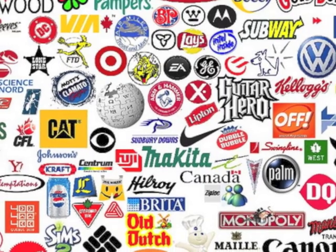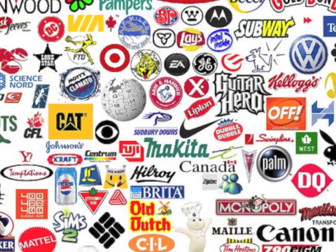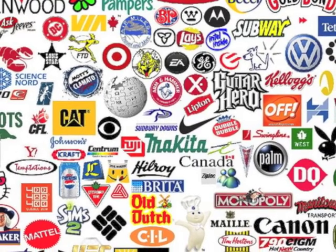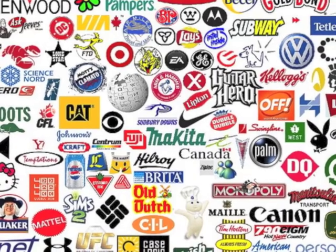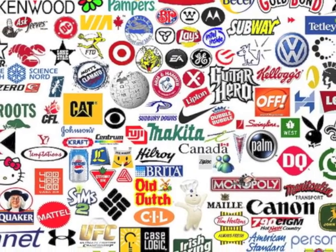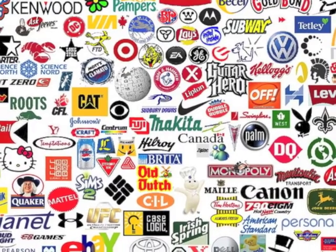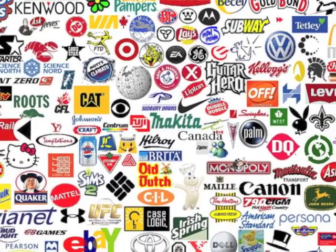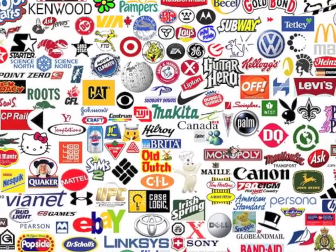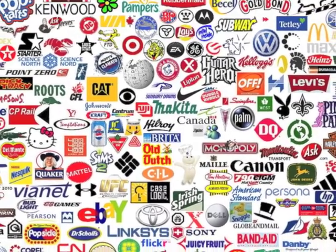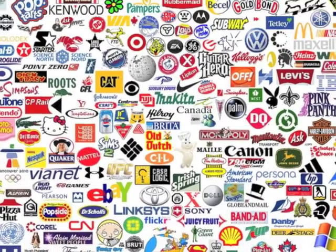Now onto your assignment. Please go to the Why Design Forum located on the Moodle page under Unit 1 and give us three examples of design from your world. Take a photo of those three objects, upload them to the forum, and then tell us why you think design was important in the creation of those items. Also, make sure that you comment on at least one other person's three items to keep the discussion moving. Good luck!